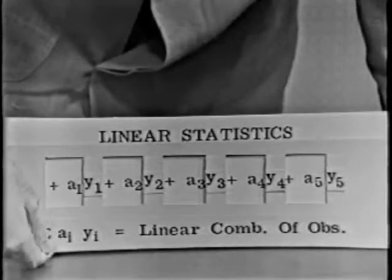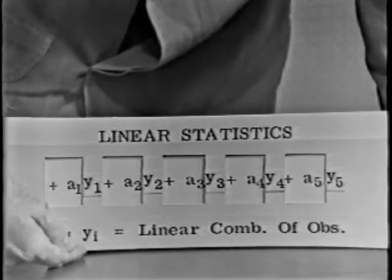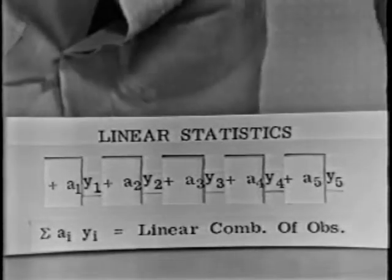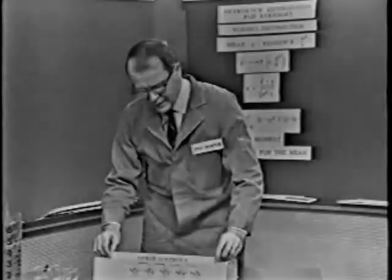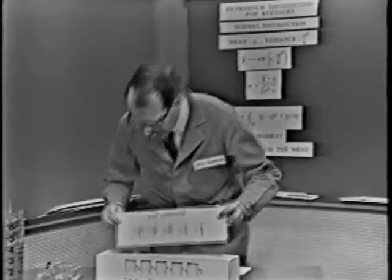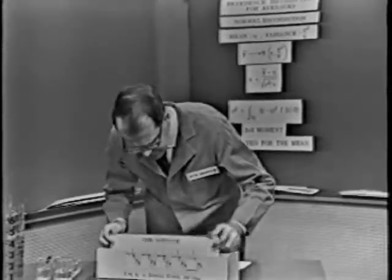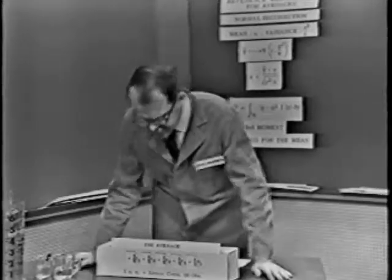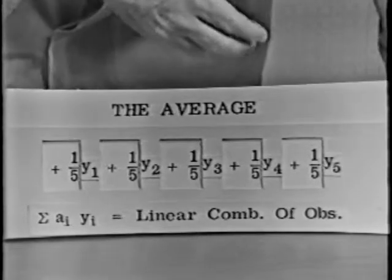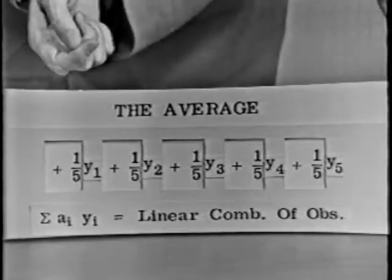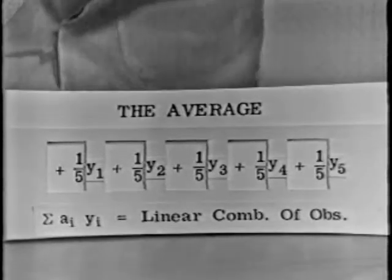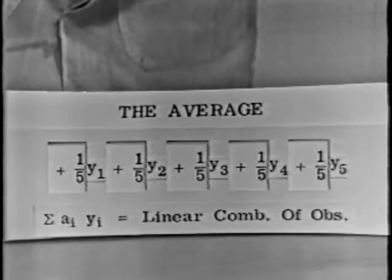Here it is algebraically: the sum of the ai's times yi gives you a linear combination of the observations, or a statistic. Now let's look at the average. You've probably never thought of the average in all this detail, but the average is a linear statistic because each one of the observations happens to be multiplied by one over n. In this case n is five, because there are five observations. So you can see quickly that the average is a linear combination of the observations.